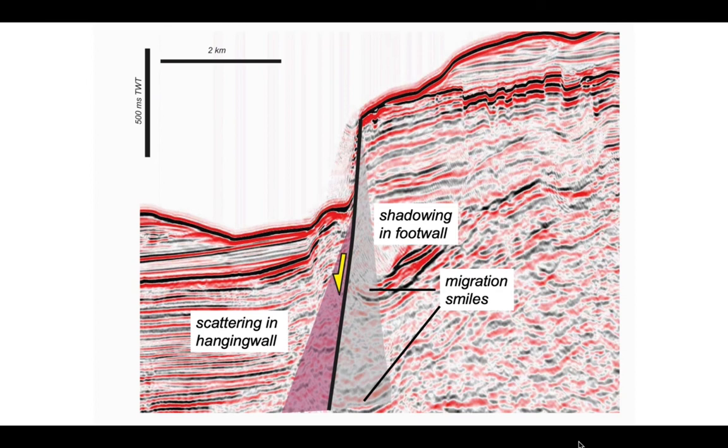On the right hand side, you see a similar effect together with those smiles, those migration artifacts where the reflectors turn up and make apparent synformal shapes which are entirely seismic artifacts. The seismic quality in there is also degraded with this so-called shadowing effect. And this is because seismic energy is bounced off the fault plane and so doesn't penetrate the footwall so clearly as it does the hanging wall. But even the hanging wall shows scattering because of rather complicated ray paths with the seismic energy bouncing off the fault plane and then back off strata reflectors and so forth. So we have a lot of image degradation around our fault.